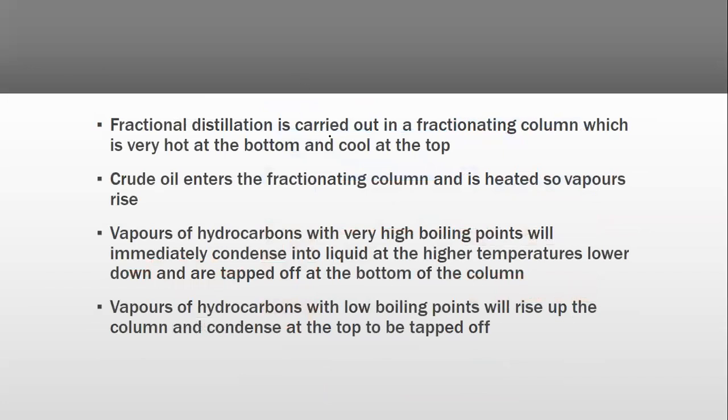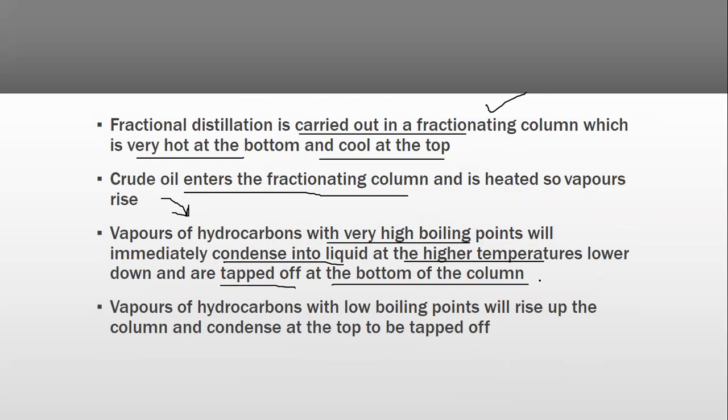Fractional distillation is carried out in a fractionating column which is very hot at the bottom and cool at the top. Crude oil enters the fractionating column and is heated so vapors rise. Vapors of hydrocarbons with very high boiling points will immediately condense into liquid at the higher temperatures lower down and are tapped off at the bottom of the column. Vapors with low boiling points will rise up the column and condense at the top to be tapped off.